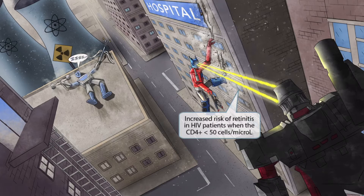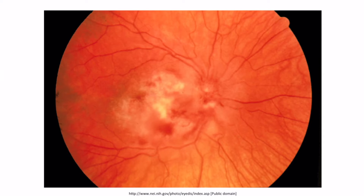Optimum Prime is also fighting back with his high-tech laser eye weapons. The laser beams coming out of his eyes represent retinitis, and the fact that this is occurring next to the 50 mph sign should help you remember that there is an increased risk of retinitis in HIV patients when the CD4 count is less than 50.